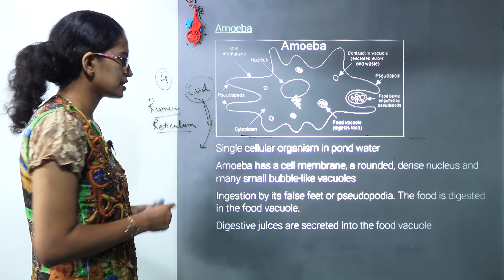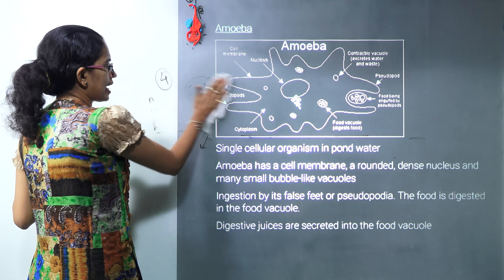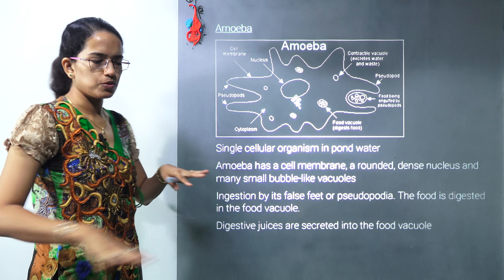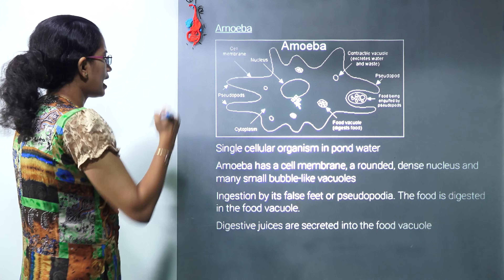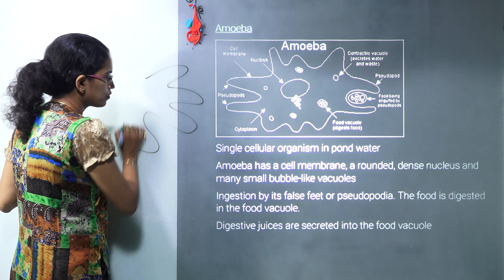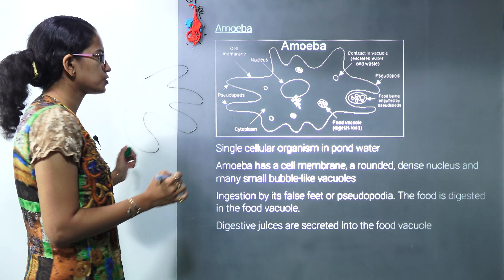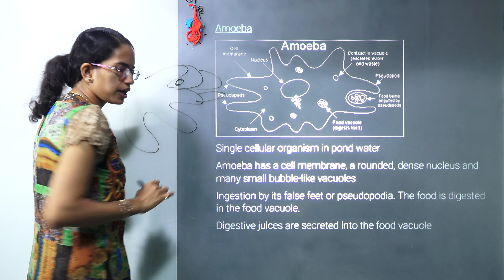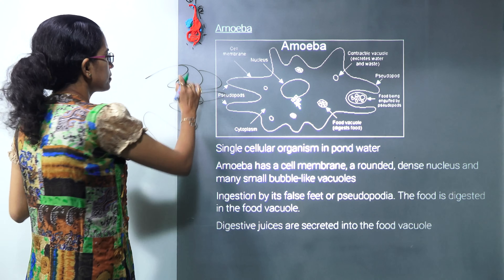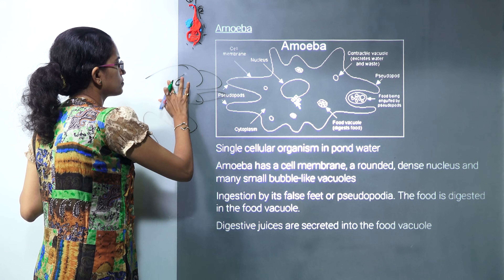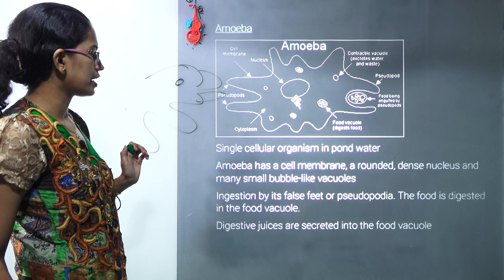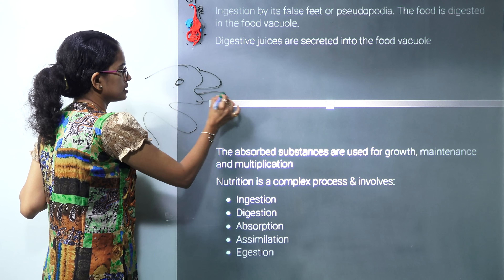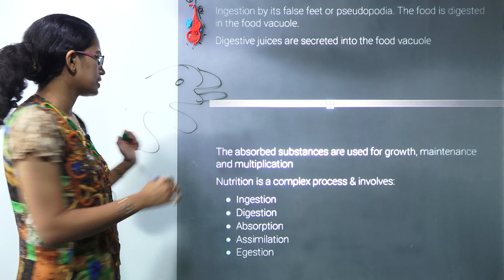Amoeba is a single-celled animal commonly found in pond water. It has a cell membrane, a nucleus, and small vacuoles. Amoeba moves like a slime using extensions called pseudopodia or false feet. As it moves, it captures food with these pseudopodia, which then become part of the amoeba itself. The food is ingested into the food vacuole, absorbed, and that completes the process of ingestion in amoeba.